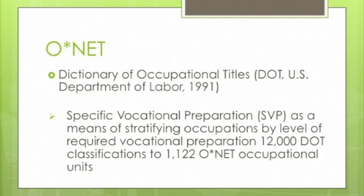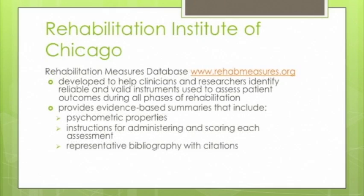The O-Net is free and allows the consumer to take some control over career planning. One place I'd like to recommend is the Rehabilitation Institute of Chicago's Rehabilitation Measures Database. It's an amazing database developed to help clinicians and researchers identify assessment instruments for all phases of rehabilitation. For each instrument, it tells you the psychometric properties — which populations it's been found to be reliable and valid for — and gives instructions for how to administer and score the assessment, plus a representative bibliography.